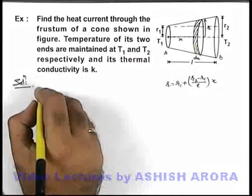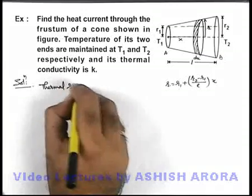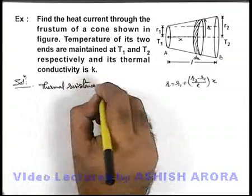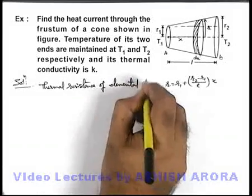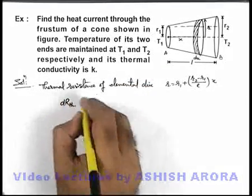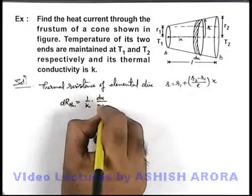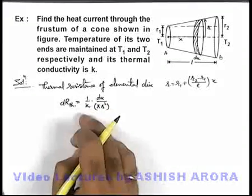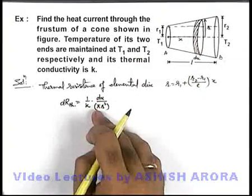Now if we find the thermal resistance of the elemental disc, this can directly be given as dR_thermal equals (1/k) times (dx)/(πr²). This is 1/k times the separation of the ends divided by its area.